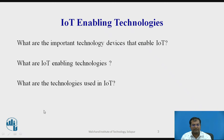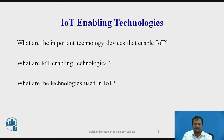What are the technologies used in IoT? The technologies used in IoT are low power wireless area network, cellular systems like 3G, 4G, 5G, Zigbee, Bluetooth, Wi-Fi, RFID, etc.